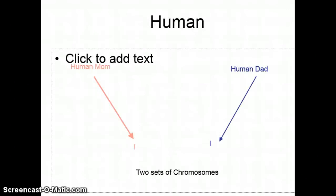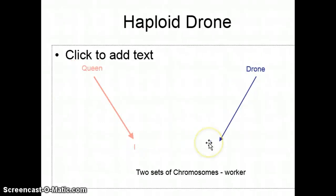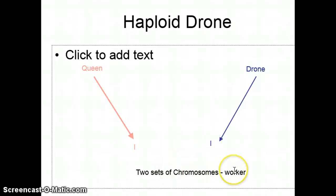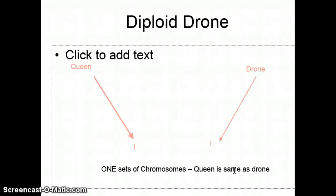Now, as with humans — who have a mom and a dad and get one set of chromosomes from each — a worker bee gets one set of chromosomes from the queen and one set from a drone, because she mates with multiple drones. But what happens if the queen mates with a drone that's genetically the same as her? Remember, drones are genetic copies of the queen. What happens if that queen mates with a drone that's hers?